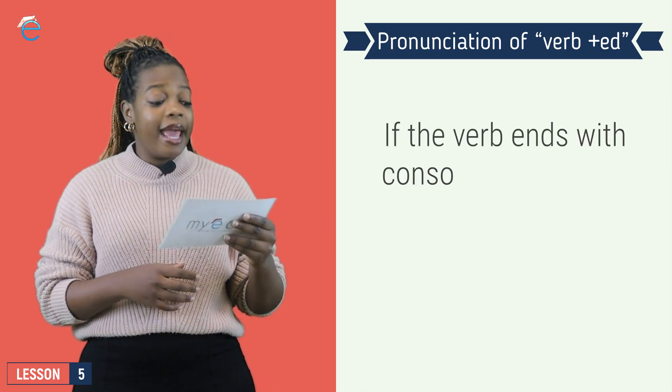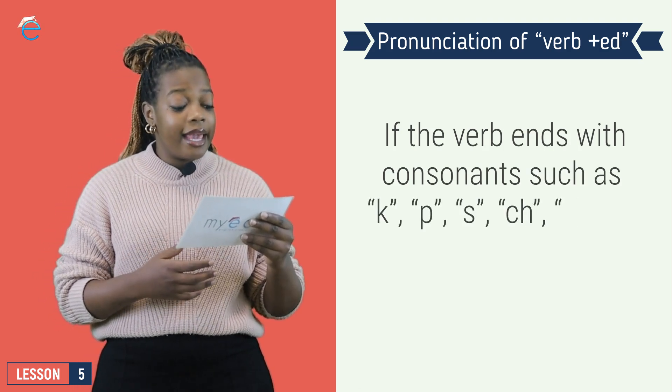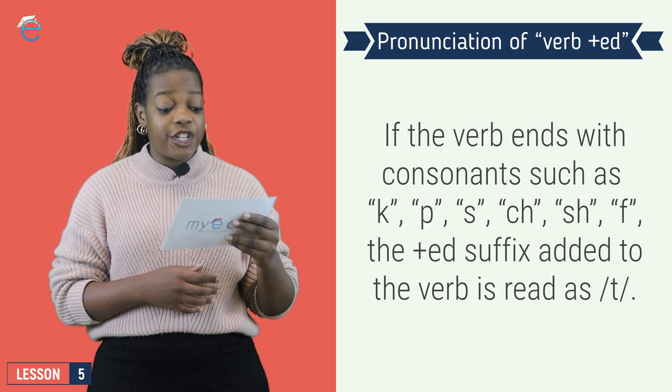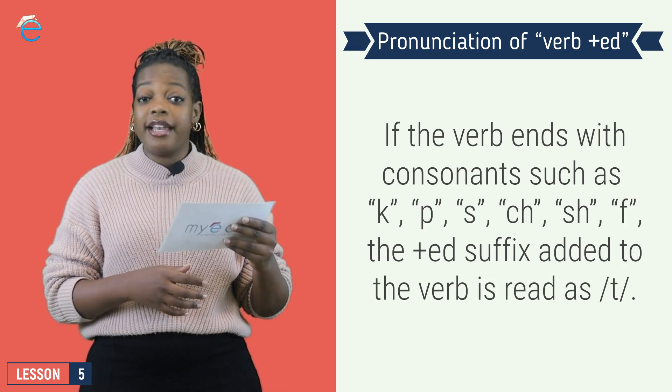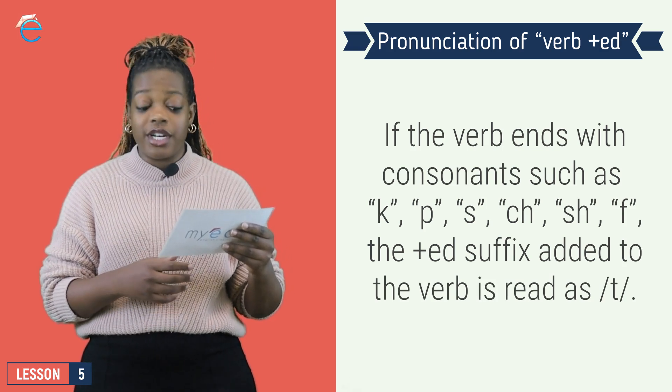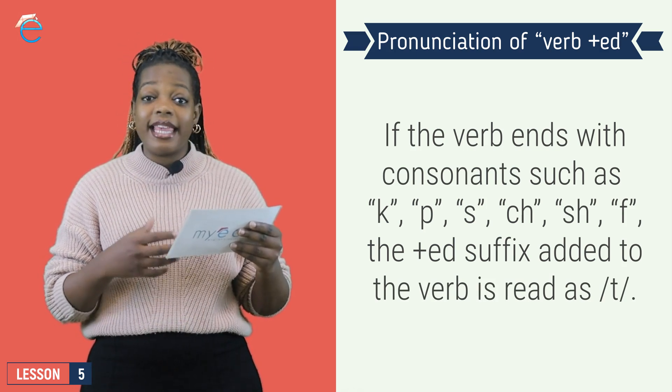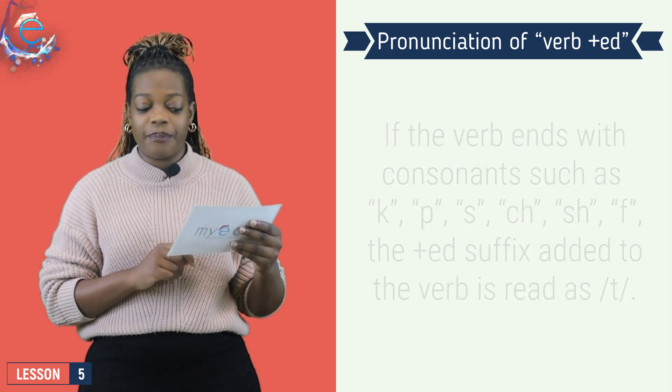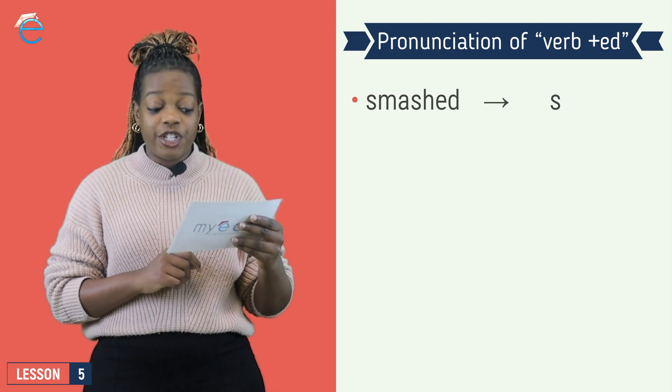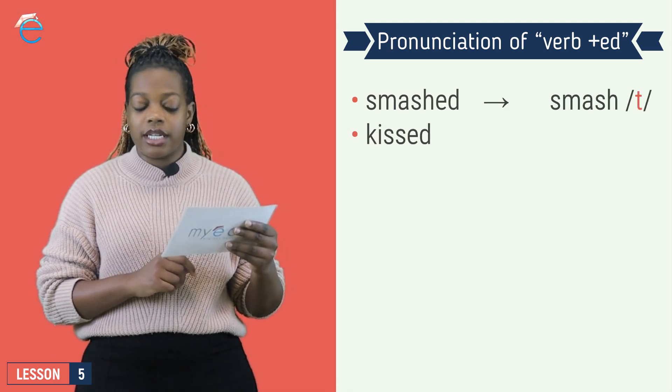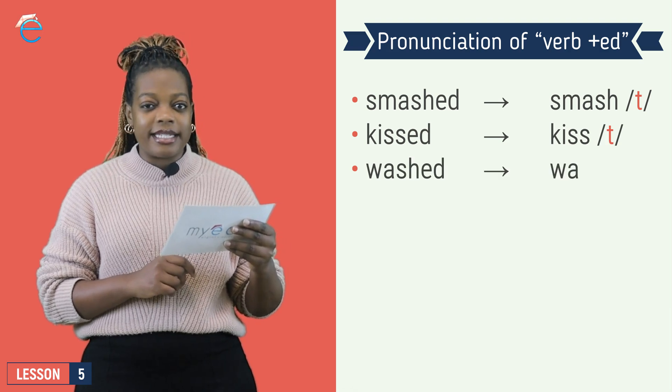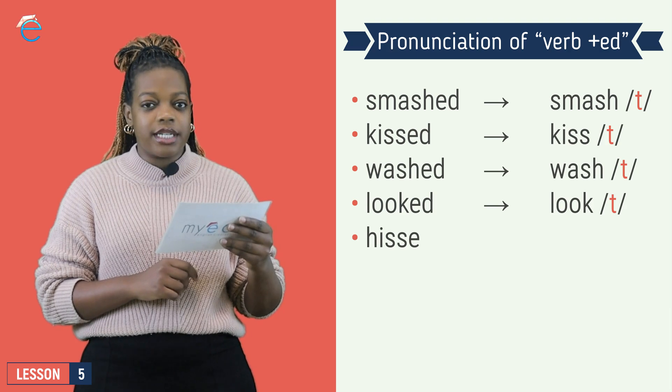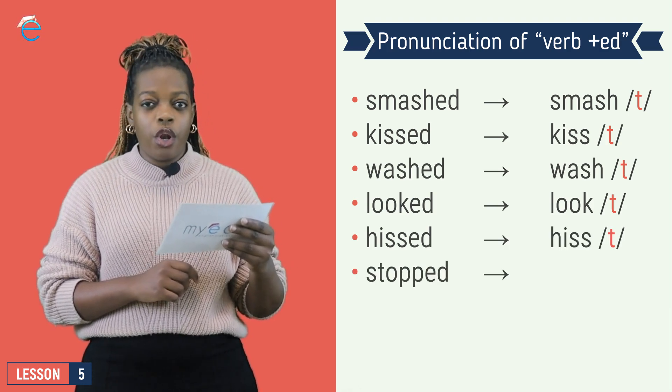If our verb ends with a K, P, S, CH, SH, F and these kind of consonant sounds, then the ED at the end becomes like a T sound. Smashed, smashed. Kissed, kissed. Washed, washed. Look, looked.